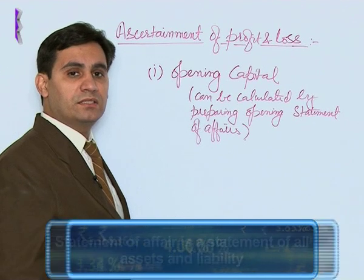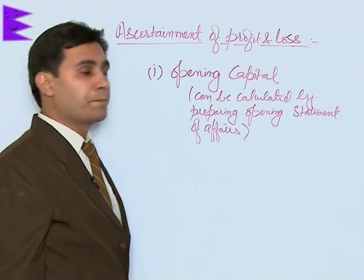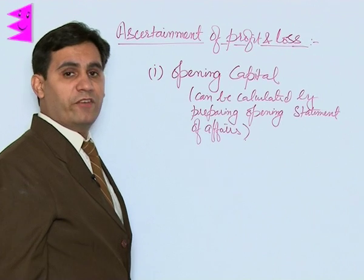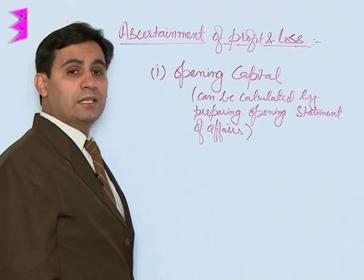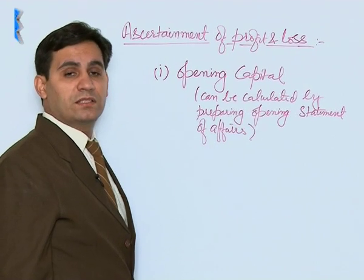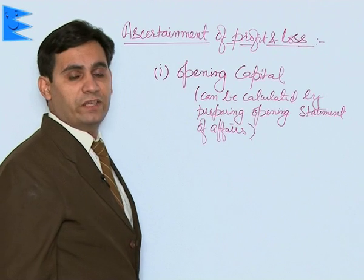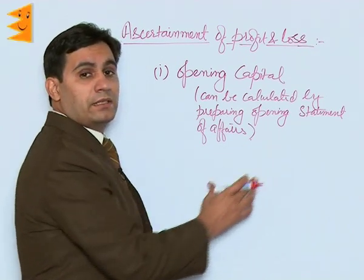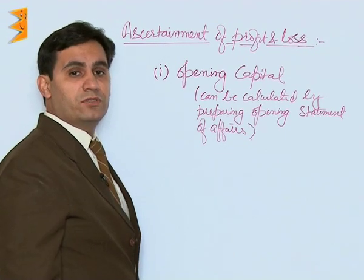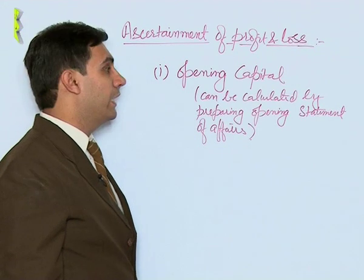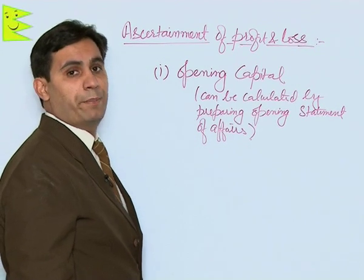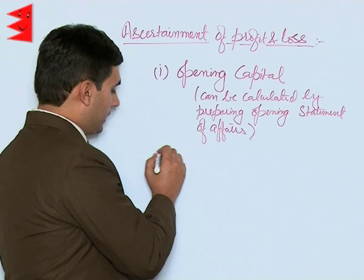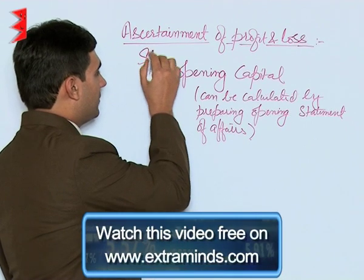The statement of affairs is just like the balance sheet in the double entry system. In double entry, it is referred to as a balance sheet, but here it is referred to as a statement of affairs. The figures in this statement are estimated figures, and they are collected together in the form of a balance sheet to get to your opening capital.